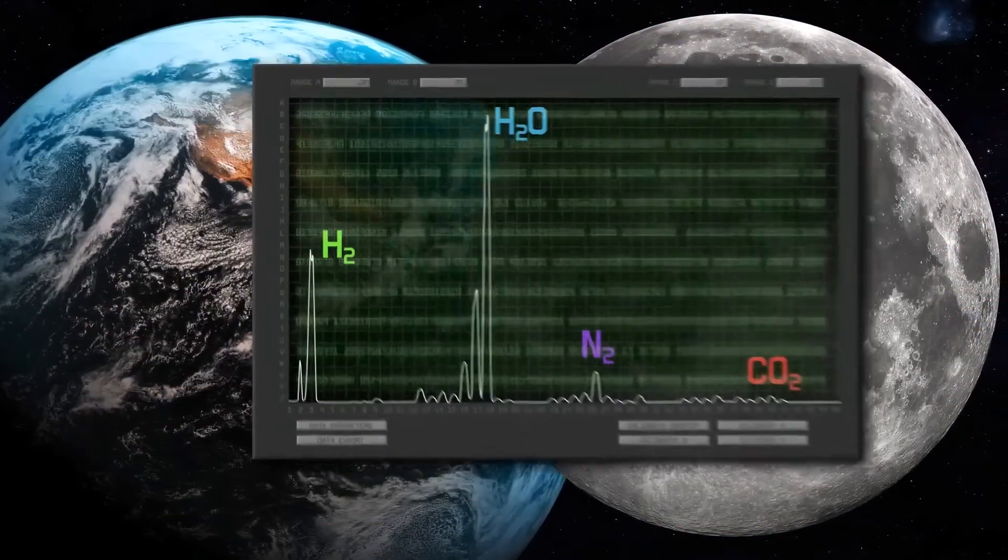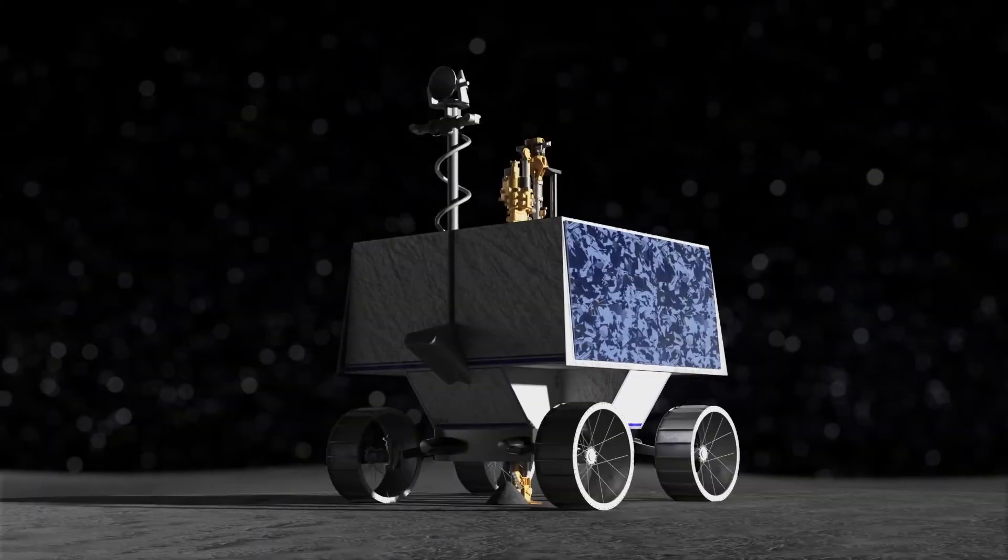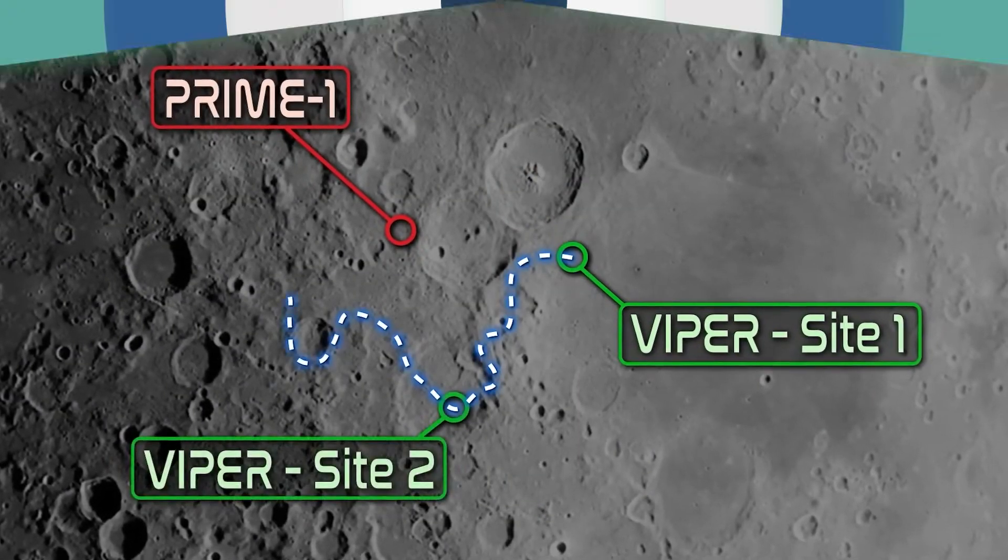The objective of PRIME 1 is to inform NASA's plans for mining resources on the lunar surface, as well as mission operations for a future NASA lunar rover mission called Viper. So how will we extract water on the moon?